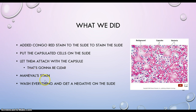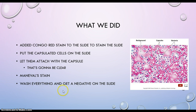Then the Manival stain comes in and stains the actual cells of the capsulated bacteria. So we have the capsules, which are the clear things; the cells, which are the darker purple things; and then we have the background, which is the pink. This gives us a kind of negative image on the slide. It's very straightforward — you just need to know the reagents: Manival and Congo Red.